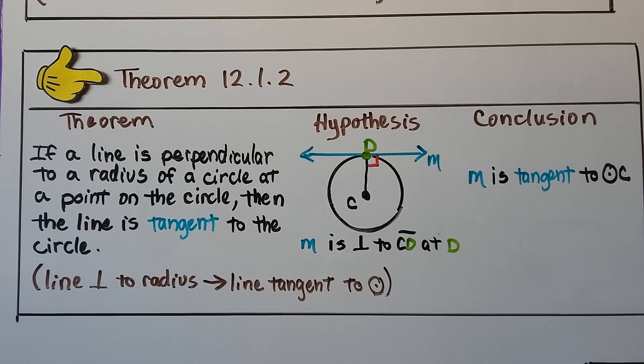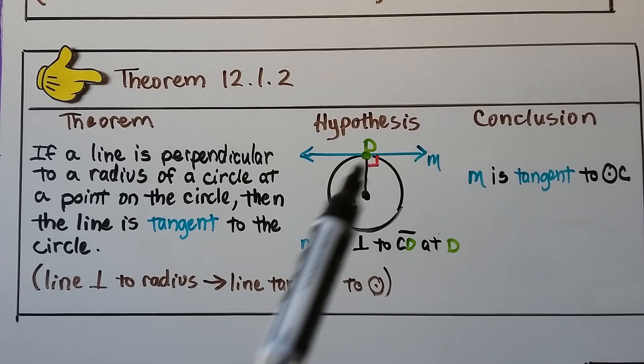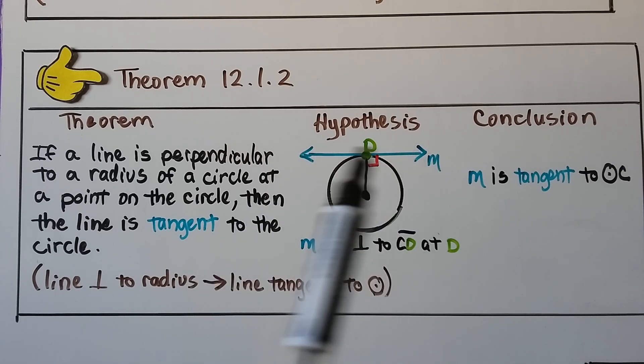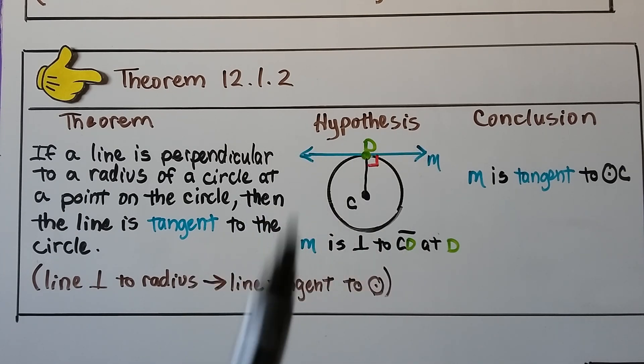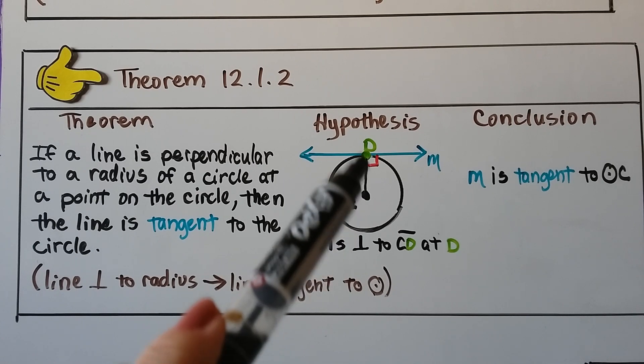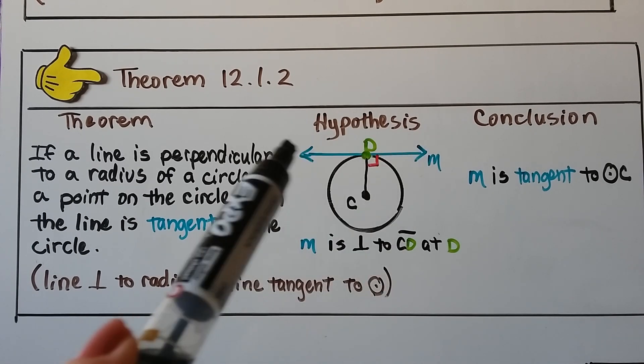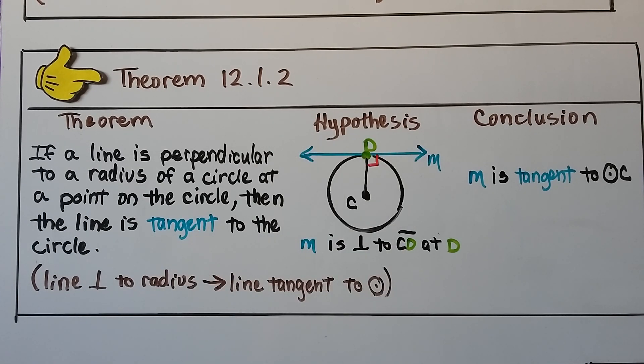We have our second theorem. It says, if a line is perpendicular to the radius of a circle at a point on the circle, then the line is tangent to the circle. Here we have line M, tangent to the circle. CD is perpendicular to M. Our conclusion is that M is tangent to circle C. We can write it in proof notation as line perpendicular to radius, therefore line tangent to circle.